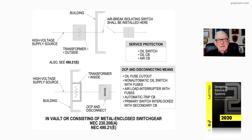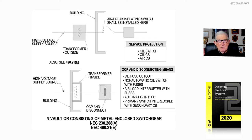So we have the lateral coming in if it's utility-owned. If you look at the service protection options: an oil switch, an oil circuit breaker, or an air circuit breaker. You can find all this information in 490.21.